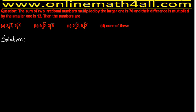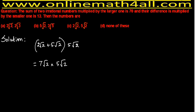We don't need to worry about Option D since it's 'none of these.' The remaining option is C: 2√2 and 5√2. Here we have like radicals — both have √2 — so we may possibly get the correct answer. Let's apply the given information. Finding the sum: 2√2 + 5√2 = 7√2. The larger one is clearly 5√2, so we multiply: 7√2 × 5√2.